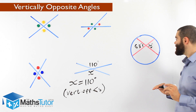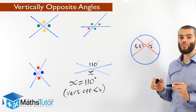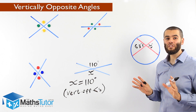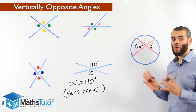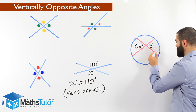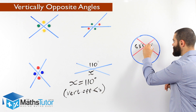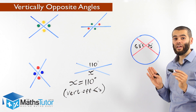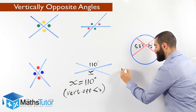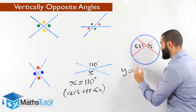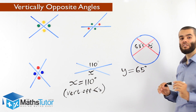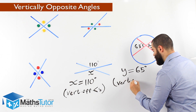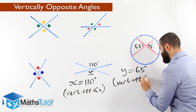Looking at this diagram, we have a circle with two straight lines crossing one another inside it. Having the circle doesn't need to worry us at all — we just need to locate where our vertically opposite angles are. We can see a straight line here and a straight line there, so this angle is vertically opposite to that angle. They are equal in size because they are vertically opposite angles. Y equals 65 degrees. Our reason: vertically opposite angles.